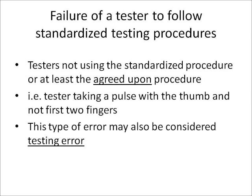Failure of a tester to follow standardized testing procedures means testers not using the agreed upon procedure. An example is a tester taking a pulse with the thumb instead of the first two fingers. The thumb has its own pulse, so you never take somebody's pulse with your thumb — always use your first two fingers. This type of error may be considered testing error.